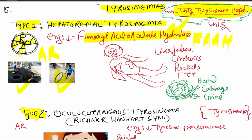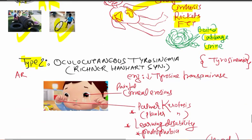Type 1 is hepatorenal tyrosinemia. As the name suggests, these patients will have liver failure, cirrhosis, rickets, failure to thrive, and their urine will have a boiled cabbage smell. The second type is oculocutaneous tyrosinemia.